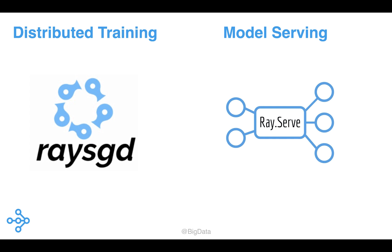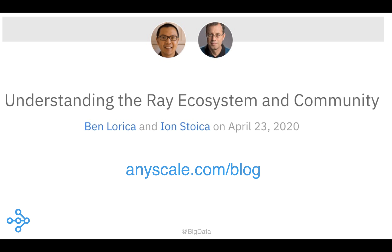RayServe is a new model serving library that supports complex and scalable machine learning pipelines. It can be used to serve predictions for large-scale interactive machine learning applications. These are just a few examples — we described other libraries built on top of Ray in a recent blog post, which you can find on anyscale.com/blog.